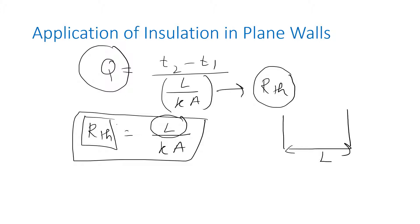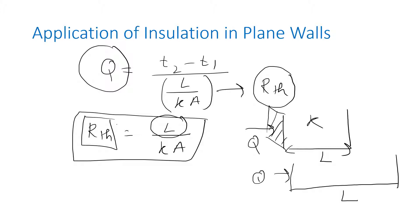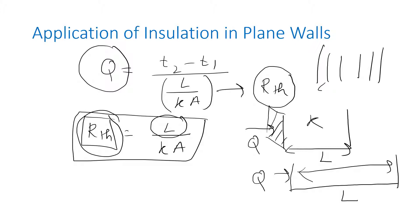Suppose this is a plane wall having thickness L, with heat flowing from one side, having thermal conductivity k. If I increase the length L, heat transfer rate will be minimum because I have increased the length, thereby increasing the thermal resistance. So in the case of a plane wall, insulation always reduces heat transfer. Adding more insulation increases thickness, which increases resistance and decreases heat transfer.